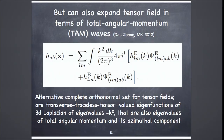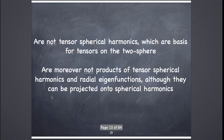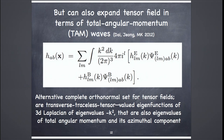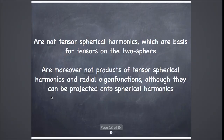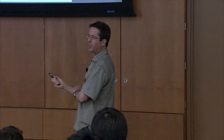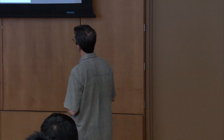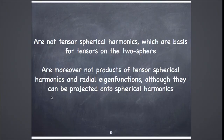The TAM waves ψ are transverse, traceless, tensor-valued eigenfunctions of the 3D Laplacian with eigenvalue −k², and also eigenfunctions of the total angular momentum and its azimuthal component. These are not tensor spherical harmonics — tensor spherical harmonics are a complete orthonormal basis for tensors on the two-sphere, and TAM waves cannot be written as products of tensor spherical harmonics times a radial eigenfunction. But they can be projected onto spherical harmonics.